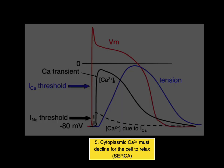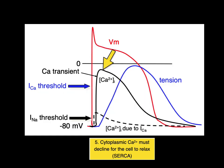But then the cytoplasmic calcium must decline for the cell to relax, and that's what SERCA does. And the intracellular cytoplasmic calcium goes down, and thus the tension of the muscle goes down.